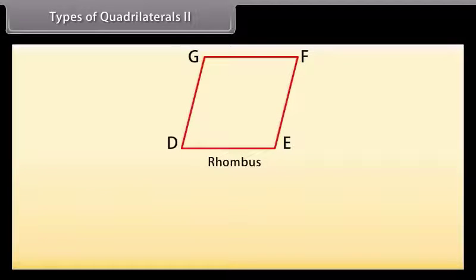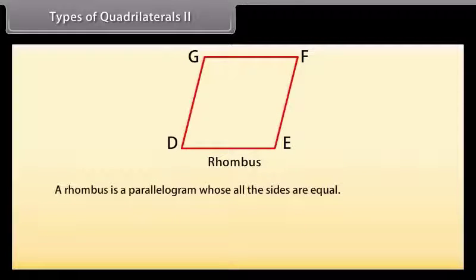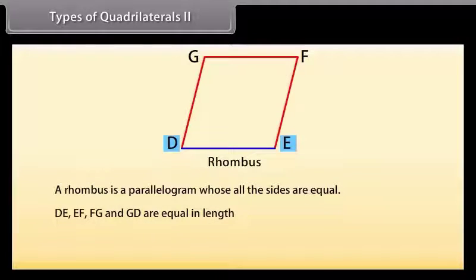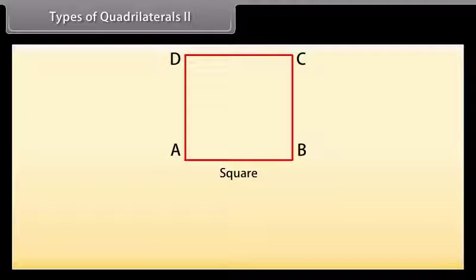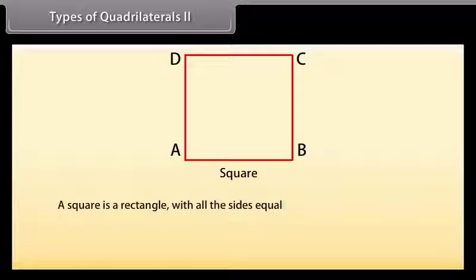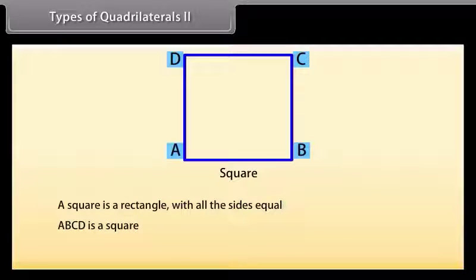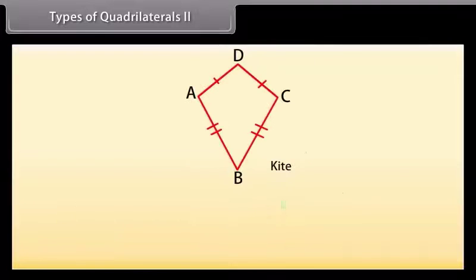Next is rhombus: a rhombus is a parallelogram whose all sides are equal. Here DE, EF, FG, and GD are equal in length, so DEFG is a rhombus. Next, a square is a rectangle with all sides equal — ABCD is a square.